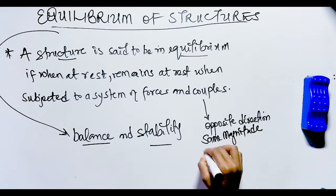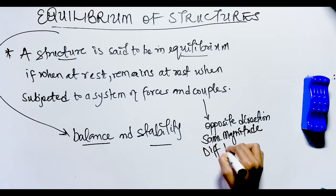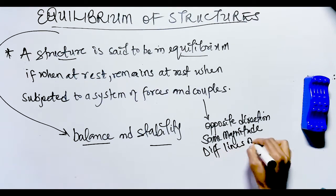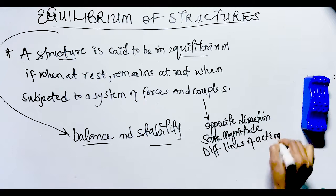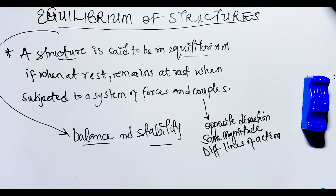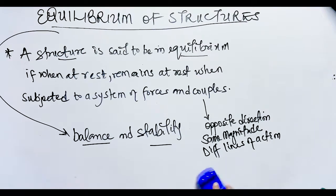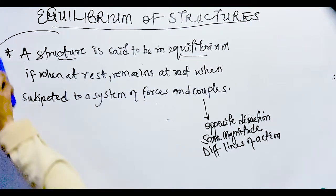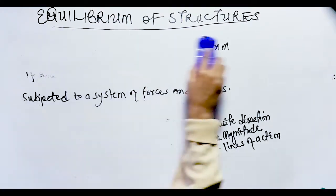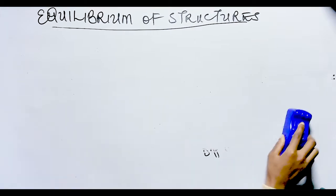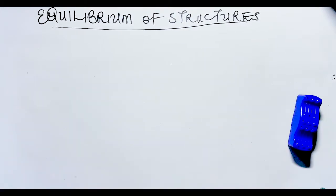So in order for a structure to be in equilibrium, all the forces and couples acting on it must balance each other, meaning the resultant force and the resultant couple must both be equal to zero — there are no net resultant couples or forces acting on the structure. Having understood what equilibrium is, we now move on to the equations of equilibrium.